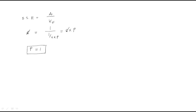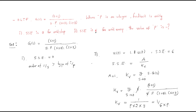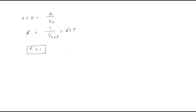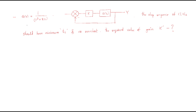This is the model for solving this type of problem. Whenever the problem gives conditions like this, find the steady-state error formula, substitute the known values into the equation, and you will get the required unknown value — here, P equals 1.